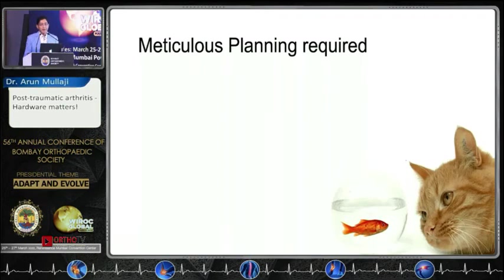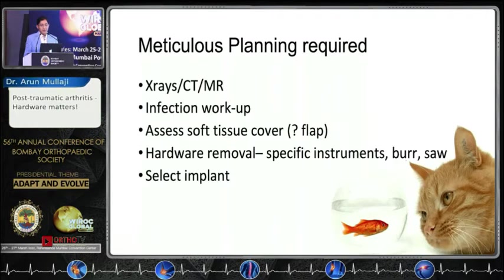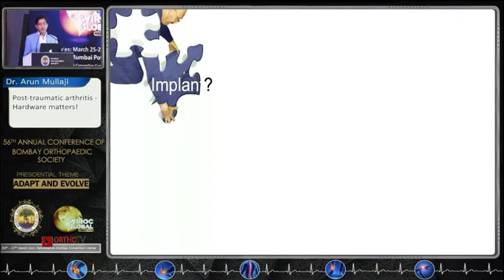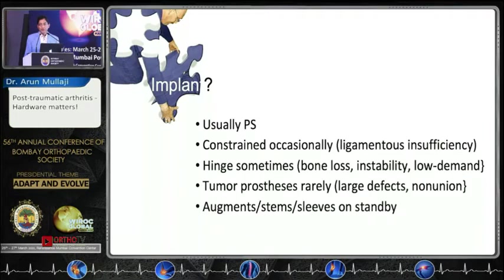Meticulous planning is required — don't underestimate the complexity. You may need all the imaging available to you. Do a proper infection workup with ESR and CRP. Assessing the soft tissue is very important: know where the scars are, and if there is hardware, whether you need specific instruments to remove it. Then move on to selecting the implant — most of the time you use a PS implant or whatever is your usual choice.